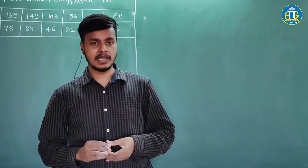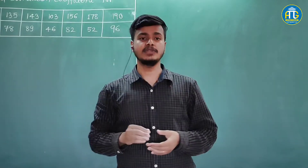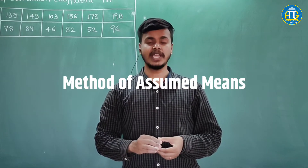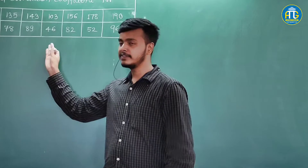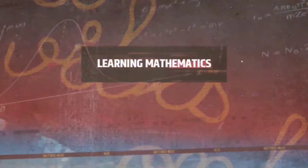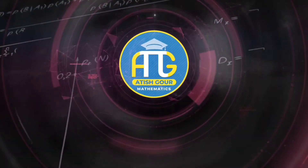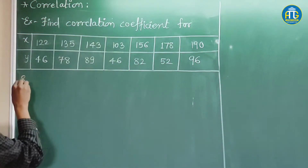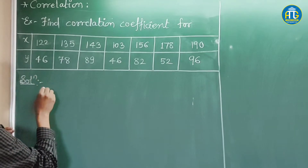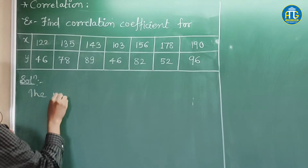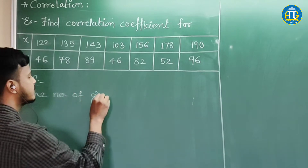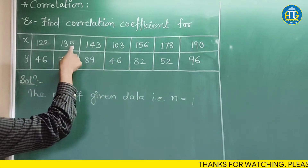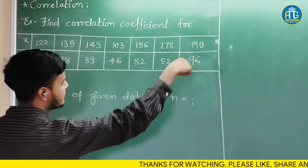We have already seen two examples on it. In this learning video, we are going to take a problem where we would be using a method of assumed means to find out the coefficient of correlation for the given data. The number of given data, that is n, is equal to 7.